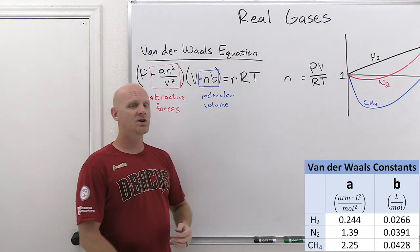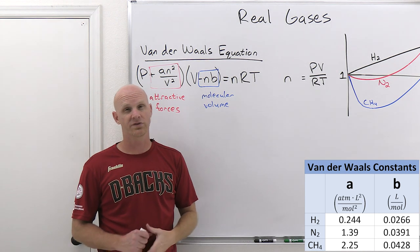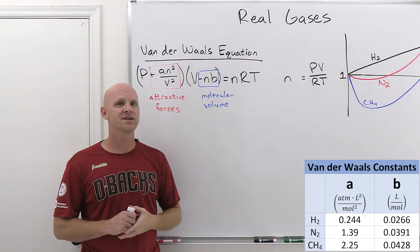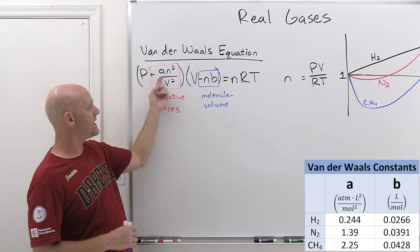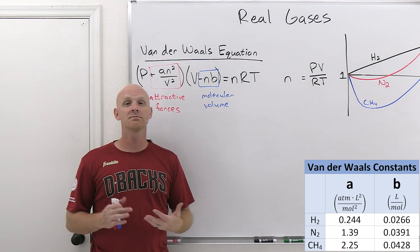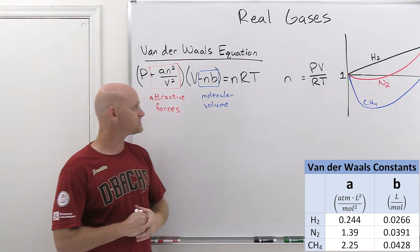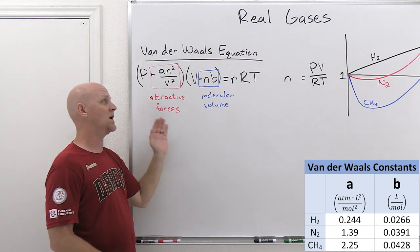Oftentimes you might get a question, instead of just graphically, you might get a table of those Van der Waals constants and be asked which of those gases would behave the most ideally. Usually you're looking for the gas that has both the smallest value for A and the smallest value for B to be the one that's going to behave most like an ideal gas.